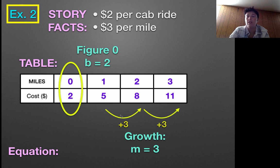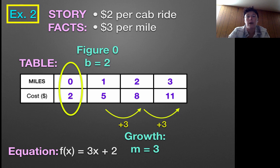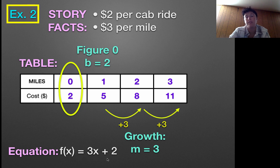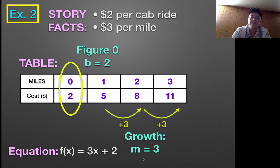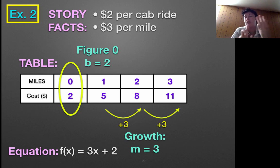So I've got m and b — that will super help me out for the equation step. Using y = mx + b, except I'll say f(x) instead of y: f(x) = mx + b. m is 3, b is 2. So f(x) = 3x + 2. That's my equation. Now we've got the story, the table, and the equation. We're just left with the graphing — that's the final piece.